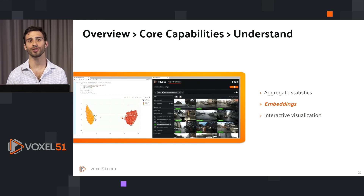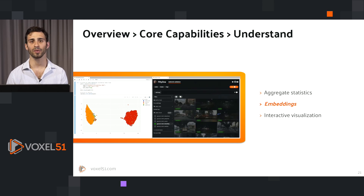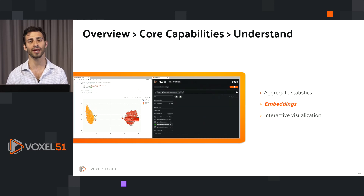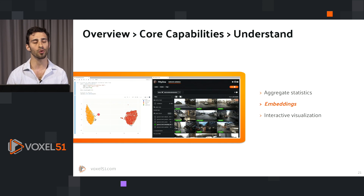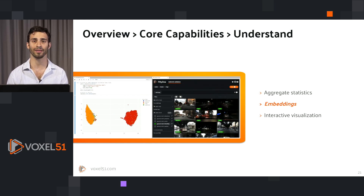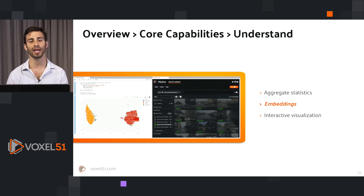Here's another example using images from the Berkeley Deep Drive dataset. These images were taken during the day, at night, or at dawn/dusk. We've computed embeddings and used dimensionality reduction to visualize the structure of our data in two dimensions. Coloring by time of day reveals roughly two clusters — one for daytime images and one for nighttime. We also see interesting clusters for images with a prominent windshield or raindrops. We can even spot a few daytime-labeled points within the nighttime cluster, and vice versa.